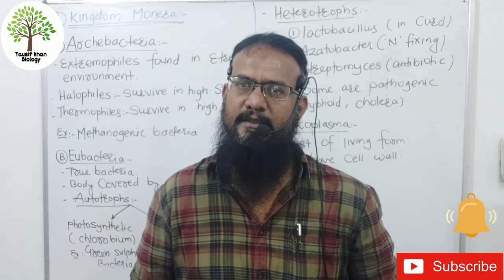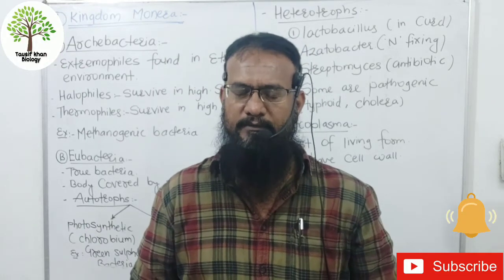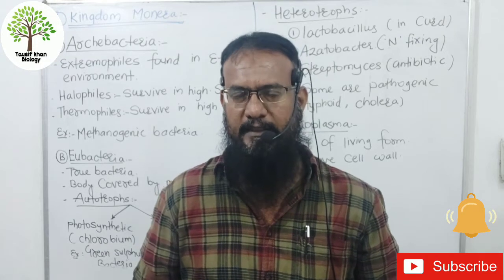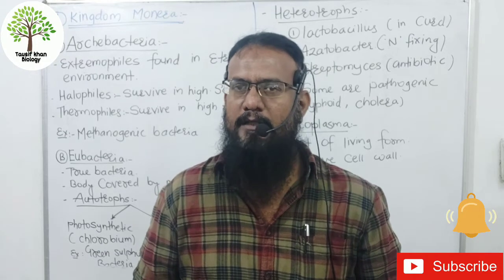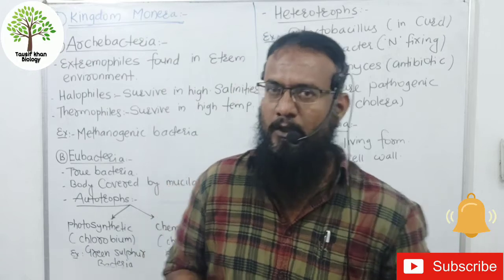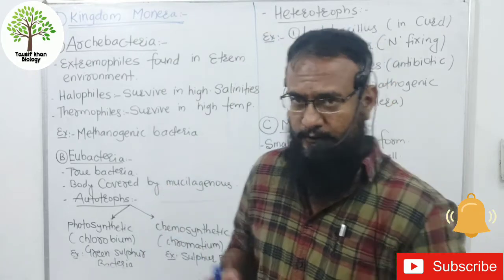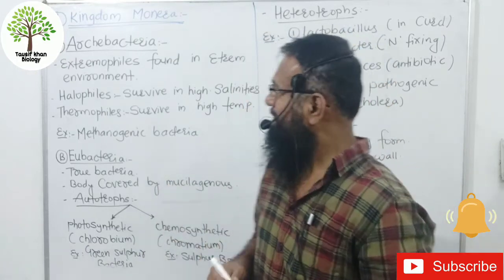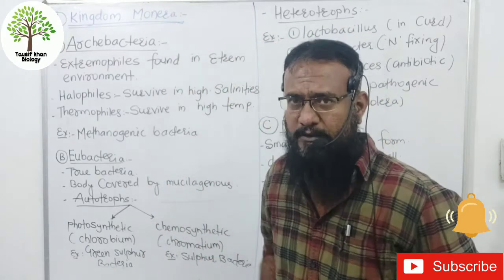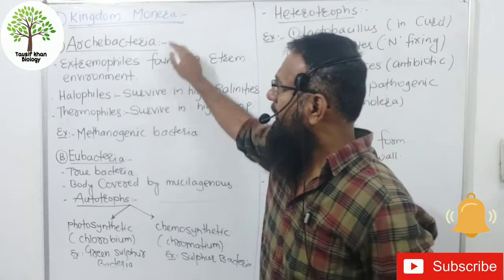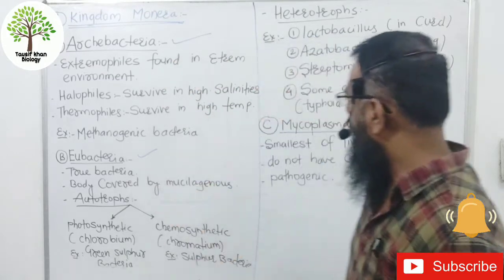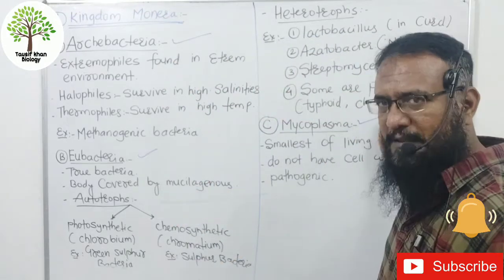In the last lecture we saw some general features and characters. Today we will see the types and examples. Kingdom Monera has three types: Archaebacteria, Eubacteria, and Mycoplasma.